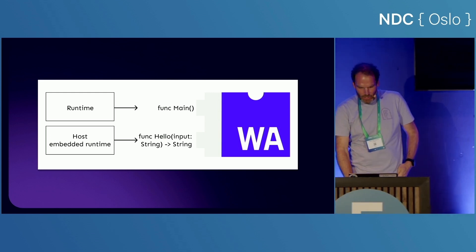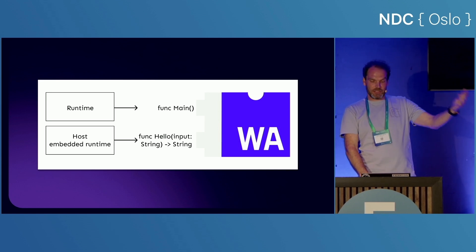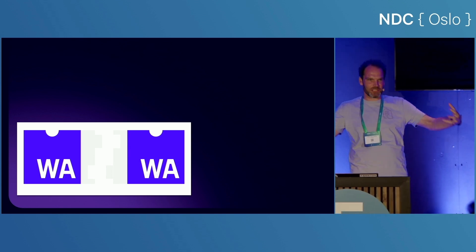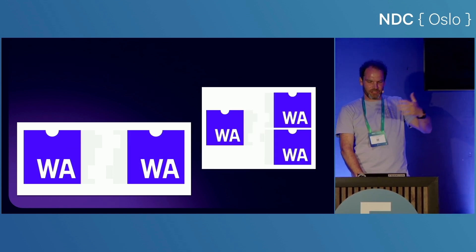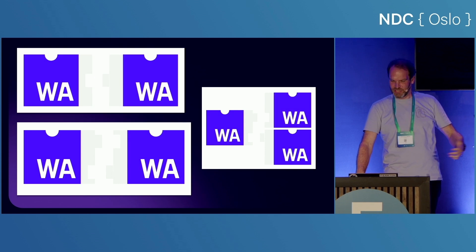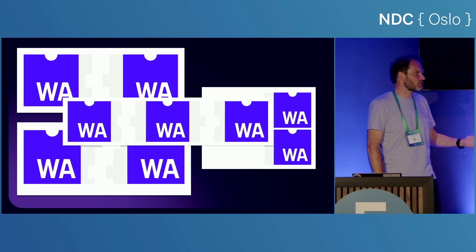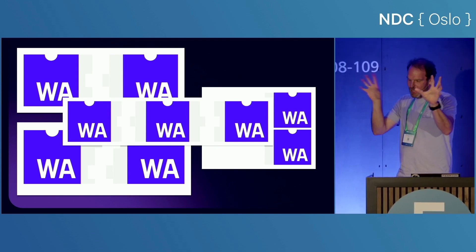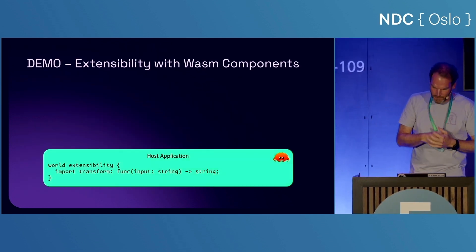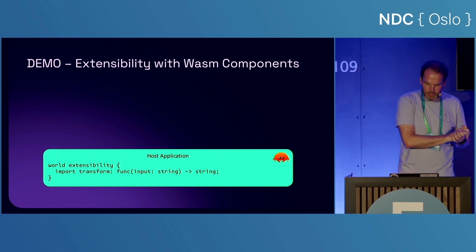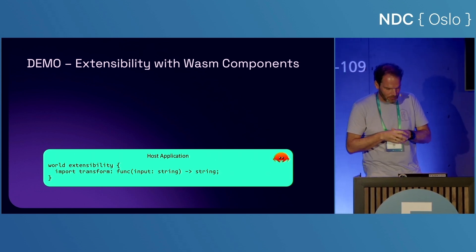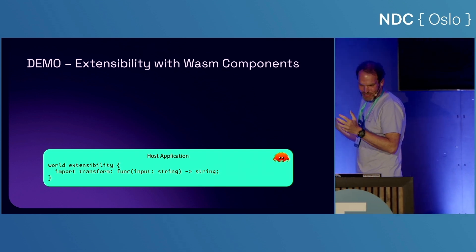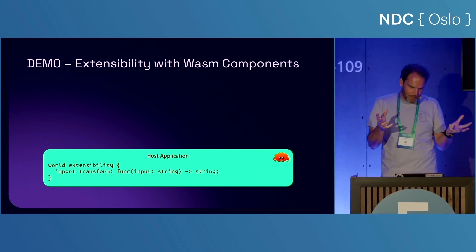You can think about composing applications by combining components — some importing, some exporting — and putting these together in various ways. This could lead into a discussion of software architecture, but the point is you can compose your applications by pulling all these things together. Let me show you how this works with a quick demo. I've written a host application — well, one of my colleagues wrote the demo and I updated it — which is a native Rust application that embeds a WebAssembly runtime.